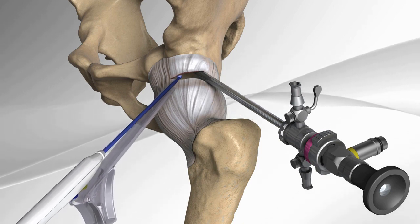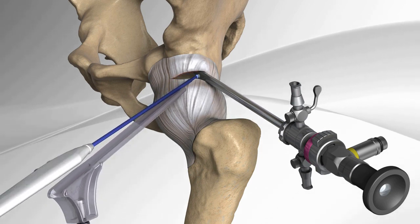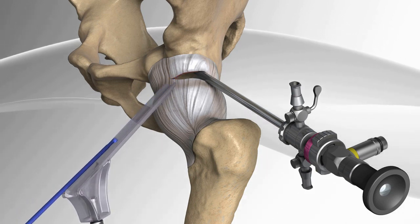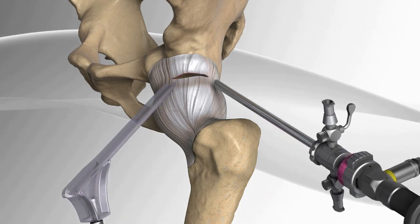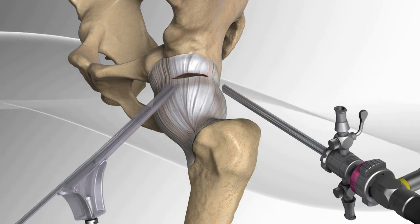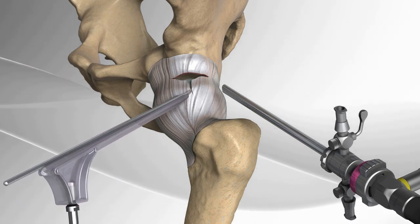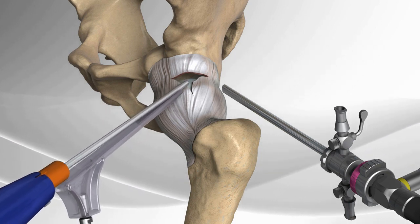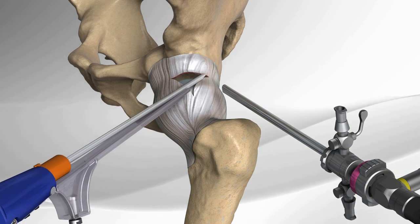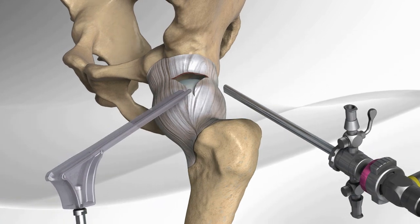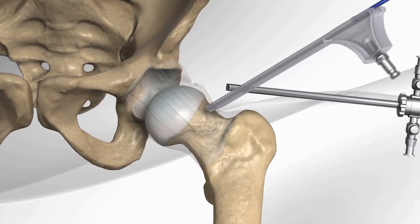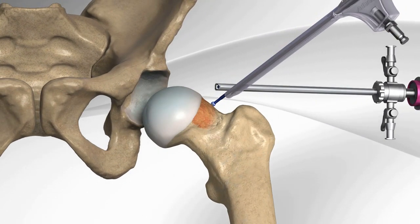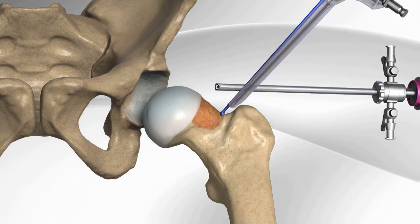A radio frequency device can be used to control bleeding. A longitudinal split is made in the capsule over the cam lesion and a shaver is introduced to clear an opening for the surgeon to perform the resection. The cam lesion is exposed and inspected. An arthroscopic burr is utilized to remove the cam lesion and restore a more normal shape to the femoral head and neck.